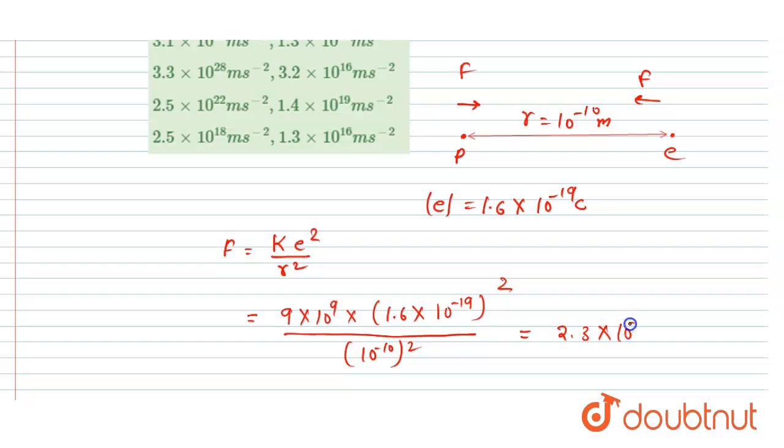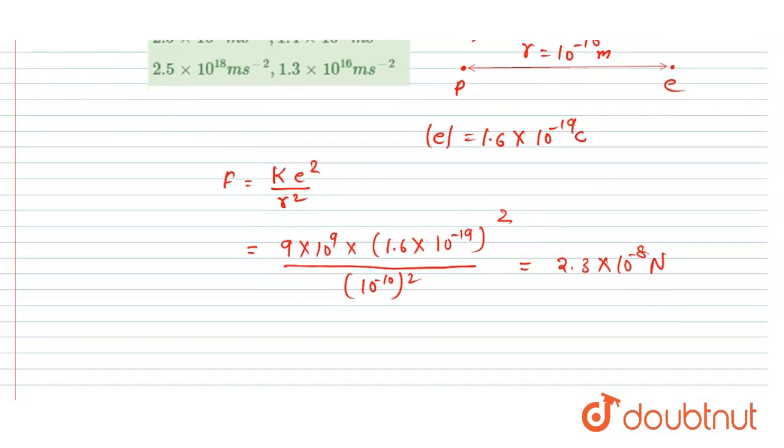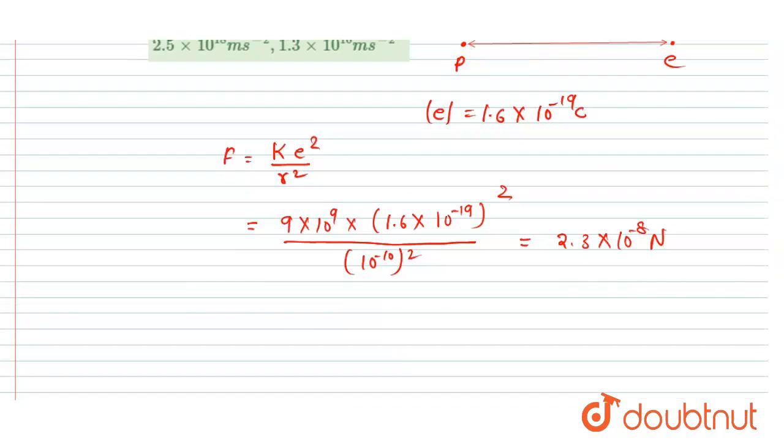Now we want the acceleration, right? So the forces on the two will be same if you see - attractive force. The magnitude of the force will be same but direction will be opposite. So if I say the acceleration of the electron, it will be force divided by mass of electron.